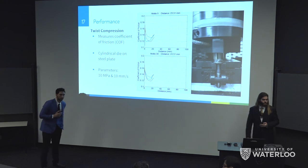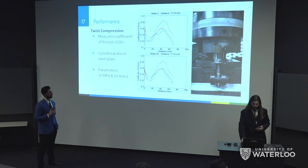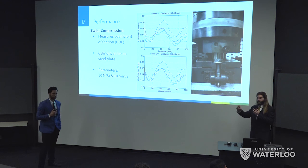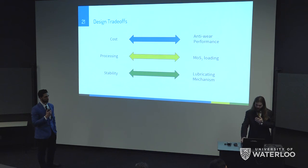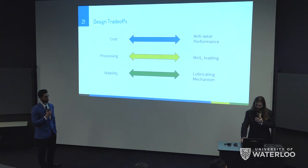Evaluator: Do you have ionic liquids here for the formulation? Response: The protic ionic liquid was added directly when mixing the concentrate. Evaluator: Which ionic liquid did you use? Response: We synthesized it ourselves from nonanoic acid and octylamine — a Brønsted acid and Brønsted base reaction. Evaluator: Thank you very much. I think we should move on to the last presentation. Thank you.